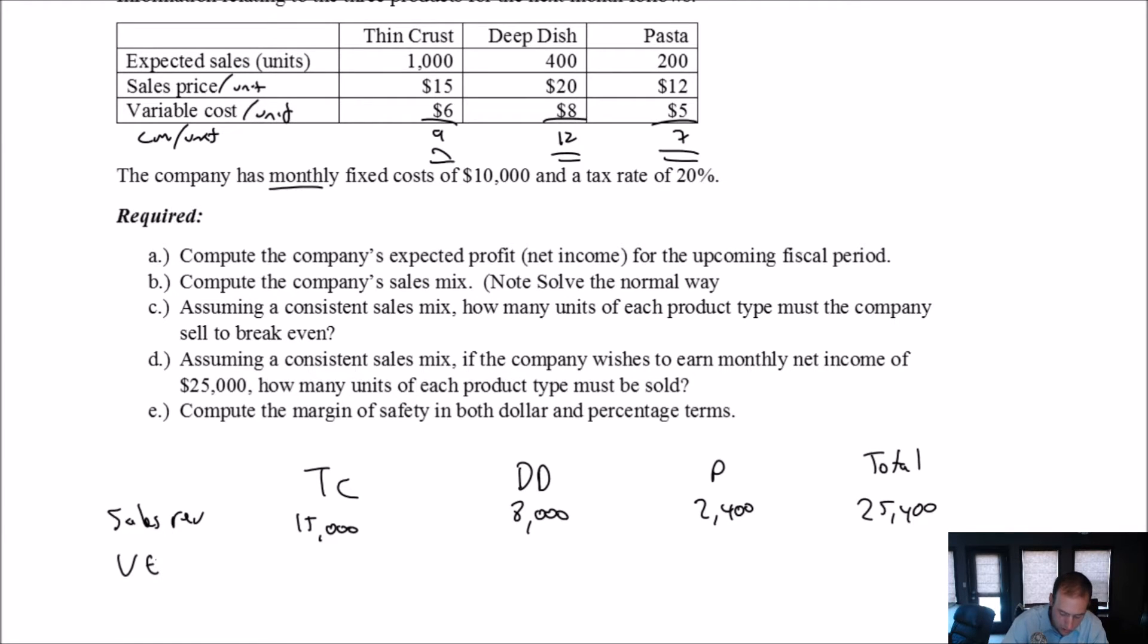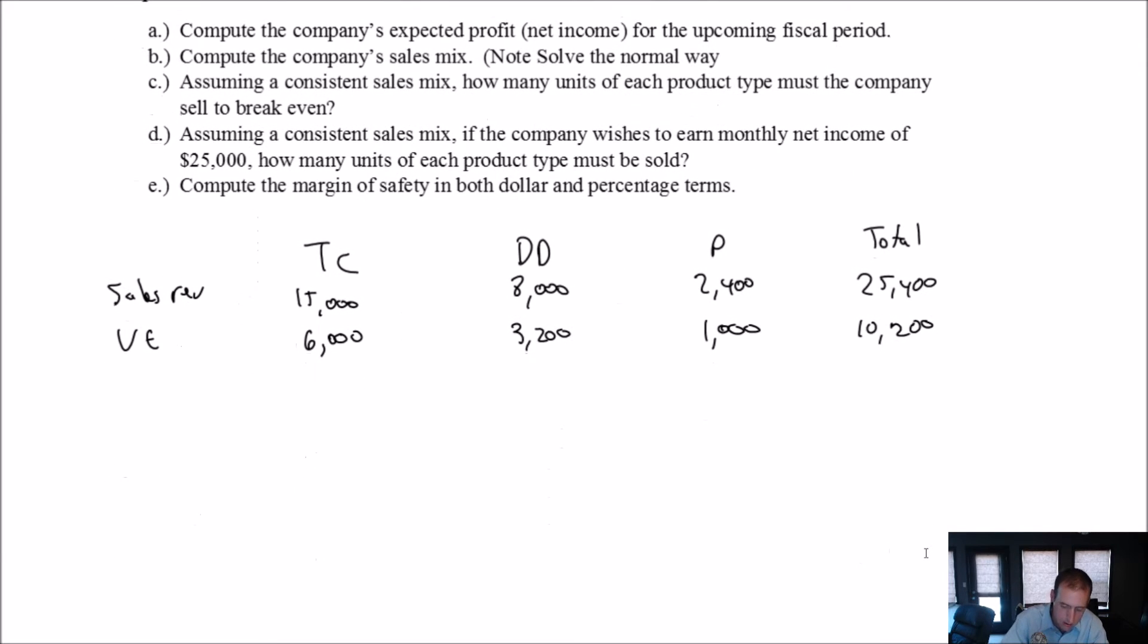On to our variable expenses. Our variable expenses are $6 a unit for the thin crust. There's 1,000 units, so that's $6,000 in variable expenses. For the deep dish, it's $400 times $8, that's $3,200. And for the pasta, $5 times $200 is $1,000. So, that is $10,200 in variable expenses. Our CM then, $15,000 minus $6,000 is $9,000. $8,000 minus $3,200 is $4,800. $2,400 minus $1,000 is $1,400. And $25,400 minus $10,200 is $15,200.